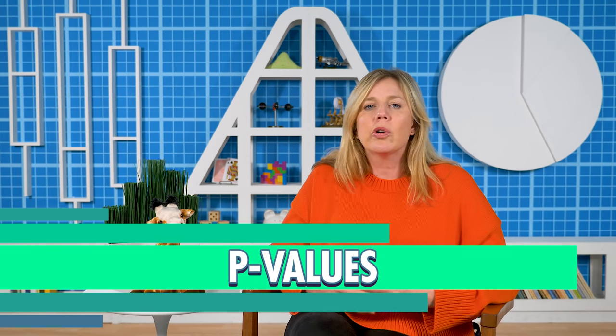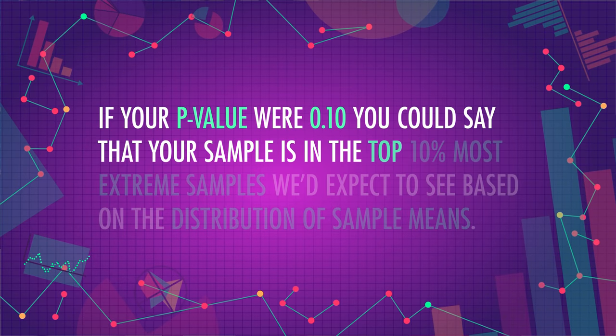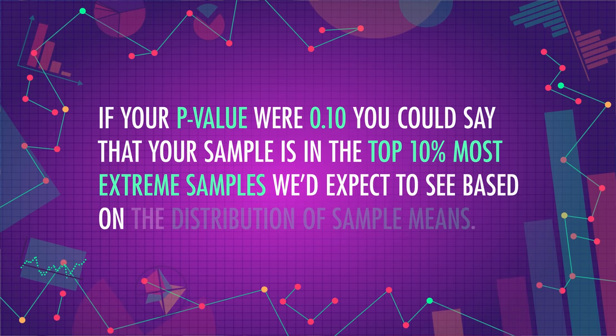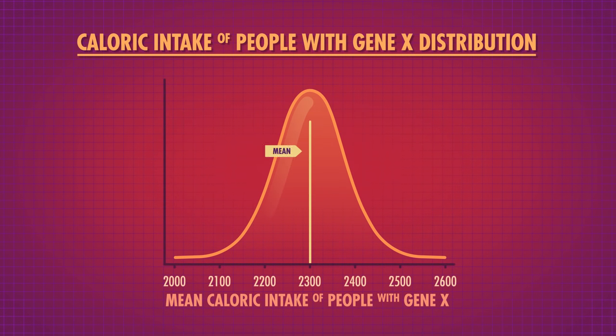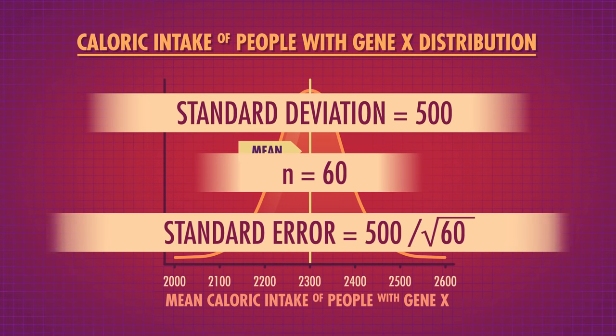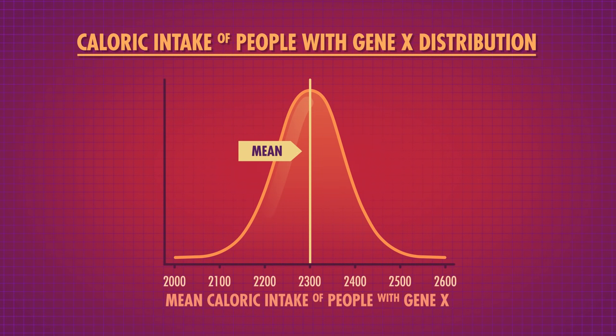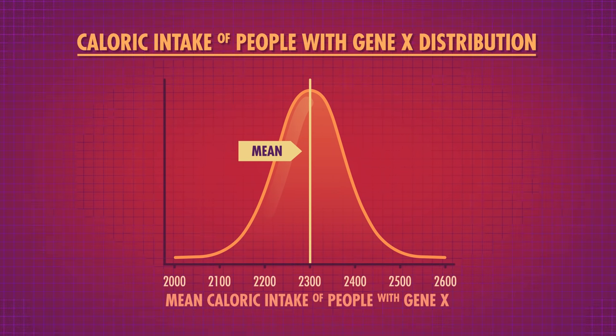Even if you haven't heard of null hypothesis significance testing, you may have heard of p-values, covered everywhere from academic journals to Buzzfeed articles. A p-value answers the question of how rare your data is by telling you the probability of getting data as extreme as what you observed if the null hypothesis were true. If your p-value were 0.10, your sample is in the top 10% most extreme samples expected under the null distribution. We use this distribution to calculate our p-value — similar to how we compared the likelihood of 200 giraffe spots, but with only one model.